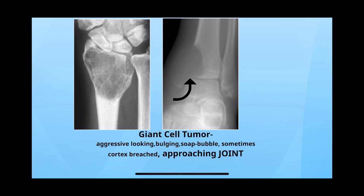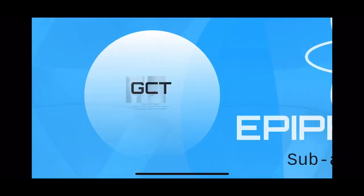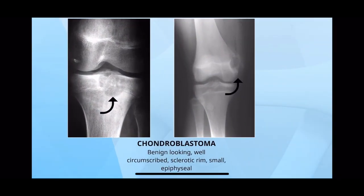The cortex might be breached in some cases, but the pathognomonic feature is that it is subarticular — the joint is almost approached. On the other hand, a chondroblastoma will have the same location, epiphyseal and subarticular, but it looks like a benign tumor because it is benign and has a sclerotic border. It is well-circumscribed, well-located, and small.